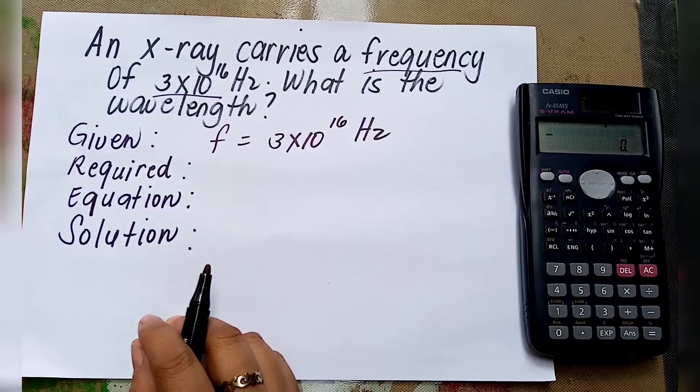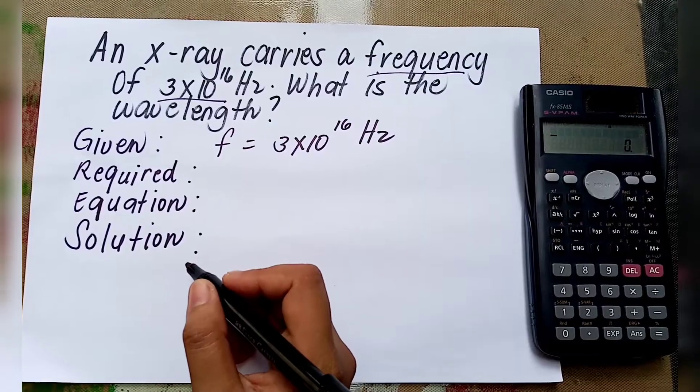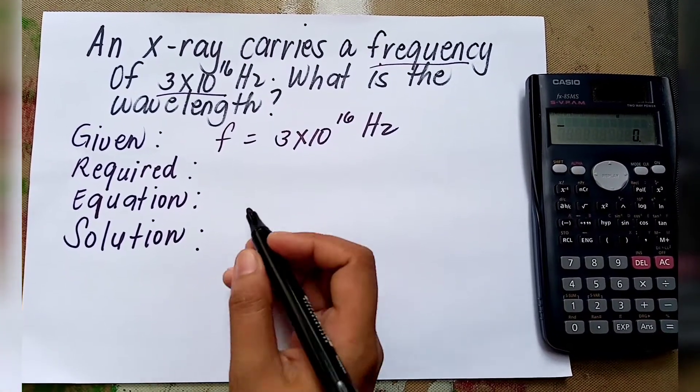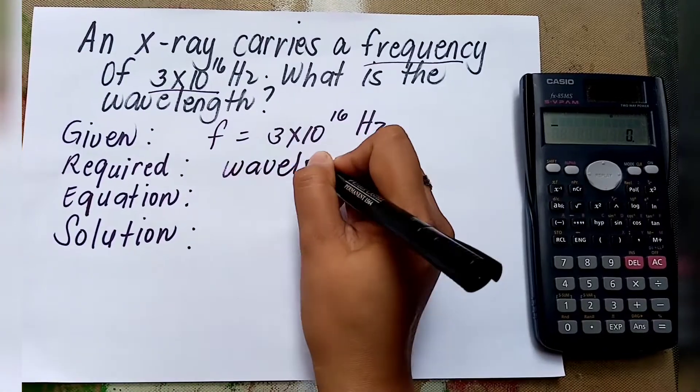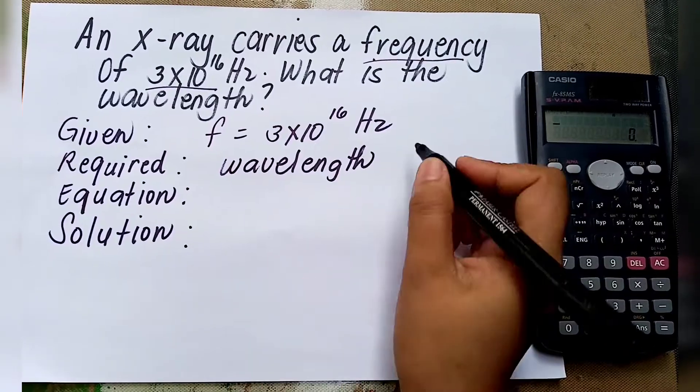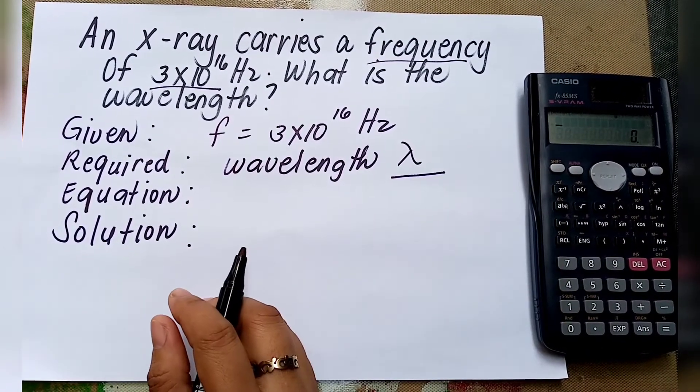After identifying the given, what is required or what is unknown? Required here is the wavelength, or we may use the symbol lambda for wavelength.